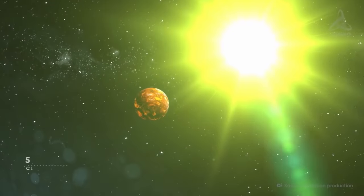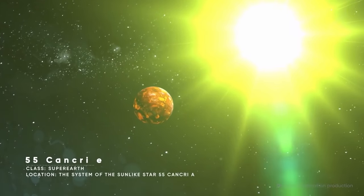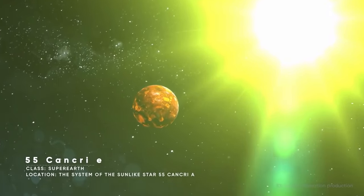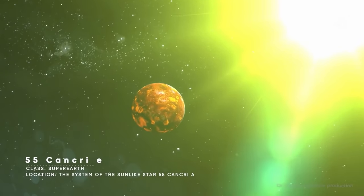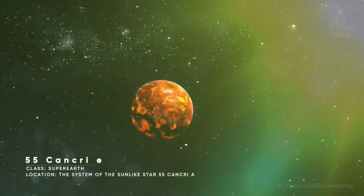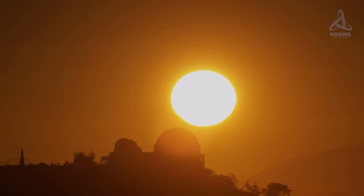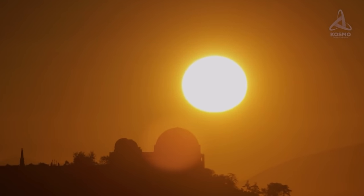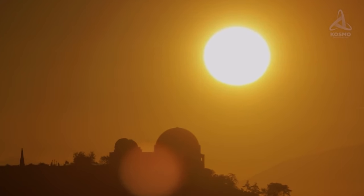Still, in spite of its gloomy looks, TRES-2b doesn't really qualify to be called the most dangerous place in the universe. There are many more objects lurking in space that are more terrifying than that. Here is another exoplanet, designation 55 Cancri e. It lies in the system of a sun-like star, designation 55 Cancri A. This celestial object was discovered on the 30th of August 2004 by the Doppler spectroscopy method.